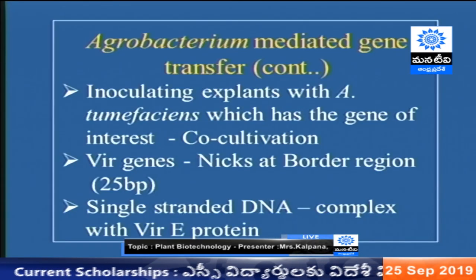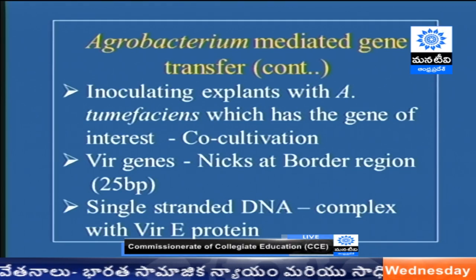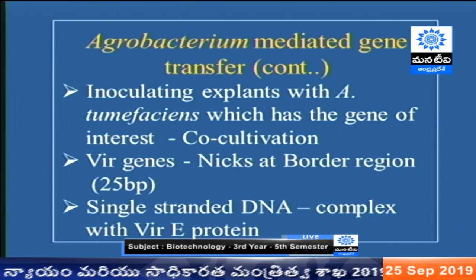Vir genes means virulence genes. If binary vectors do not contain any vir gene, they cannot induce the transfer of T-DNA on their own. So we need helper plasmids which can provide the vir proteins already present in Agrobacterium tumefaciens. We make the binary vector with the left border and right border of the T-DNA. Instead of T-DNA, we insert our own gene of interest, so the T-DNA is modified. The gene of interest has both the left and right borders, which are around 25 base pairs in length.